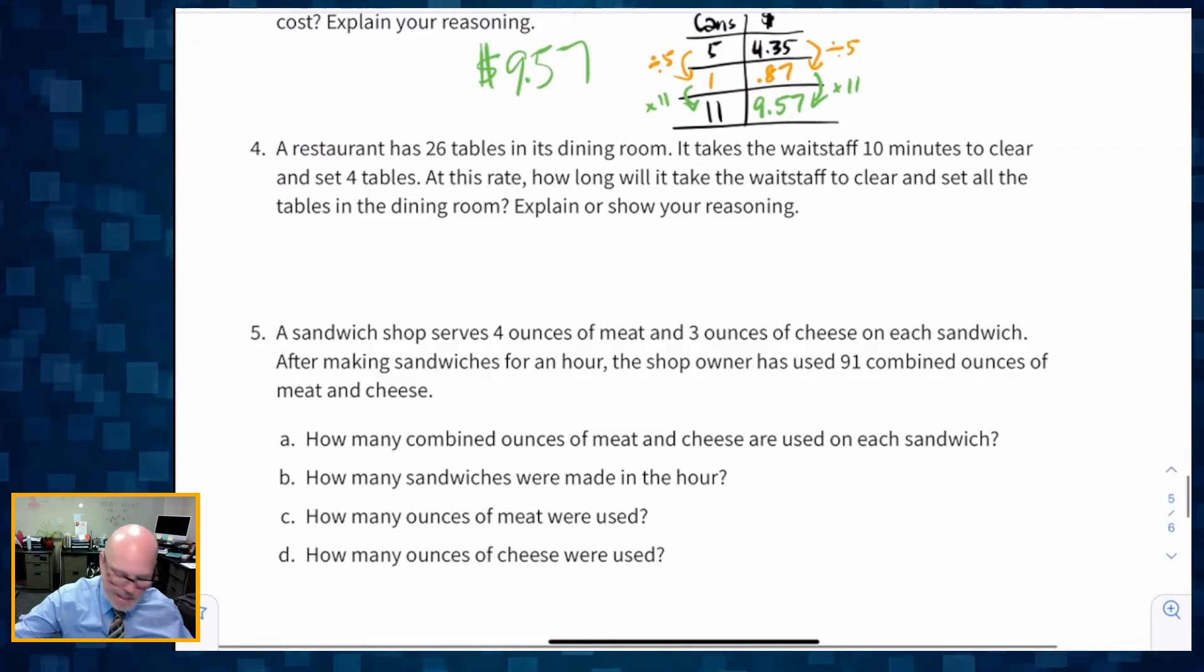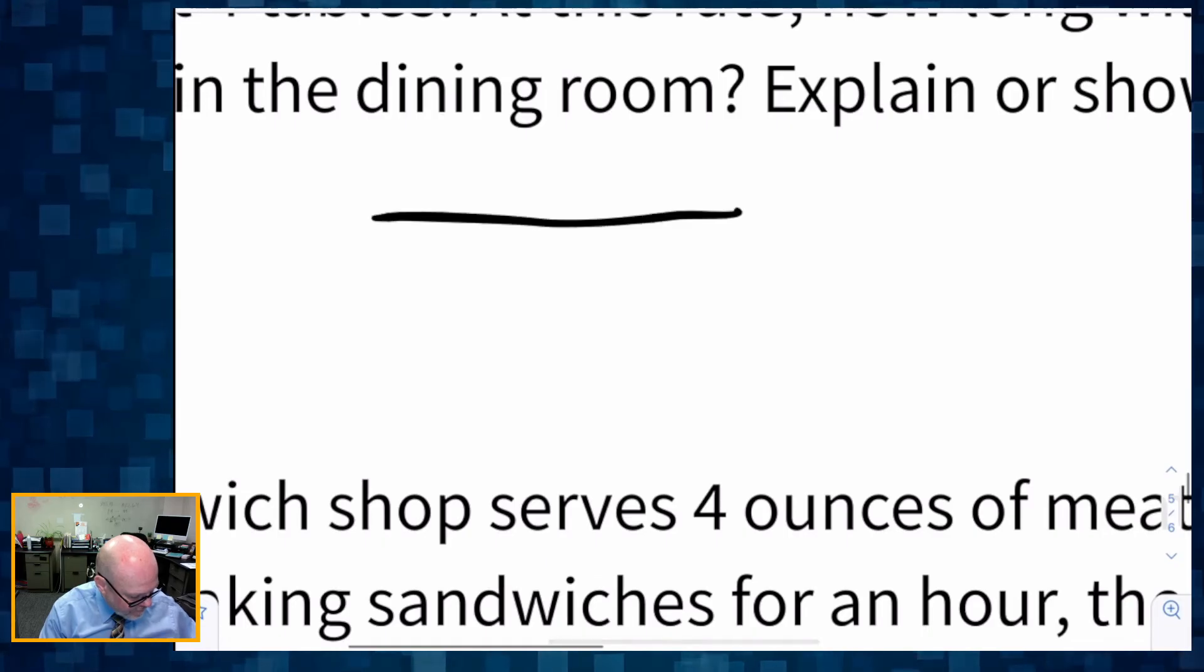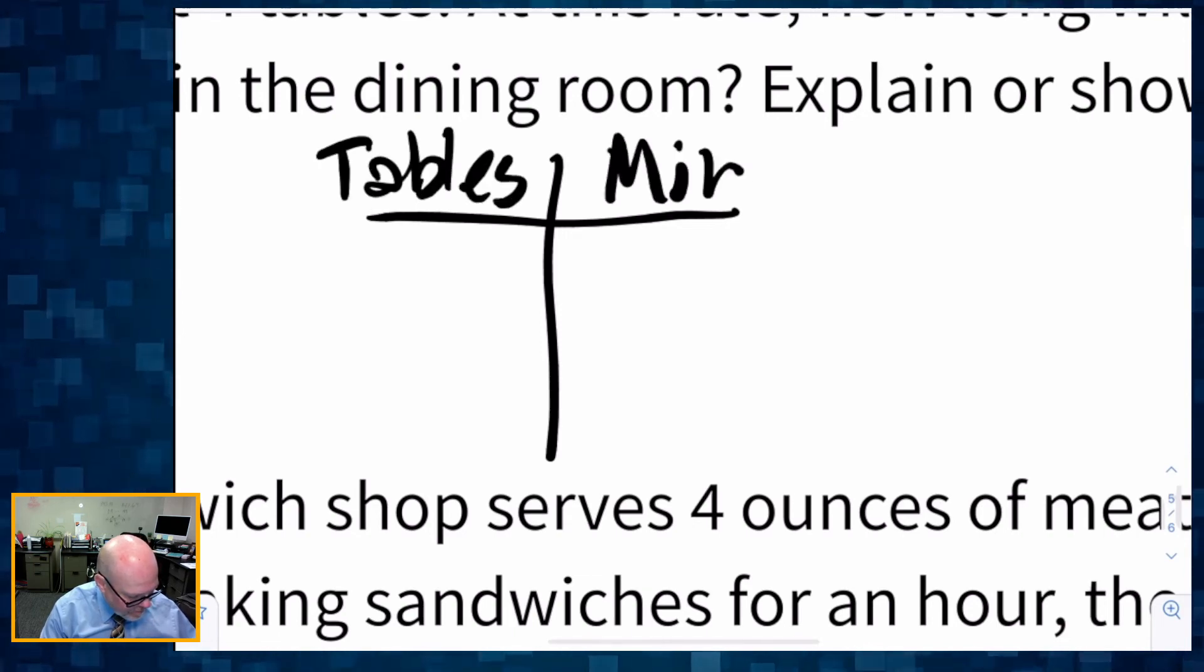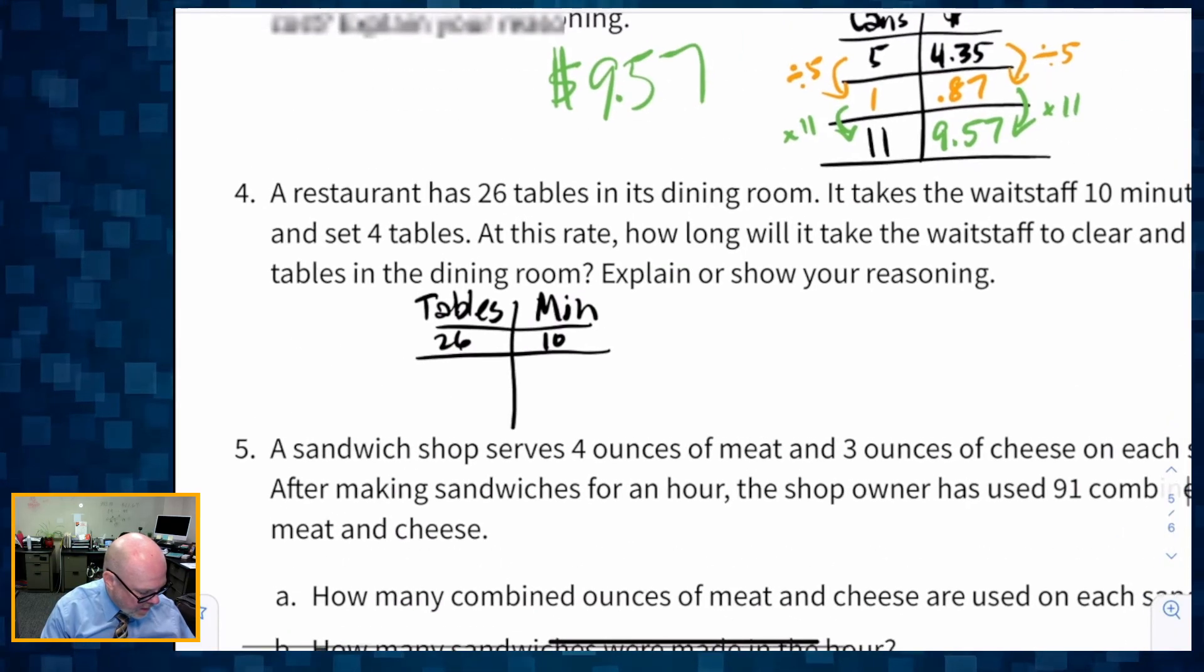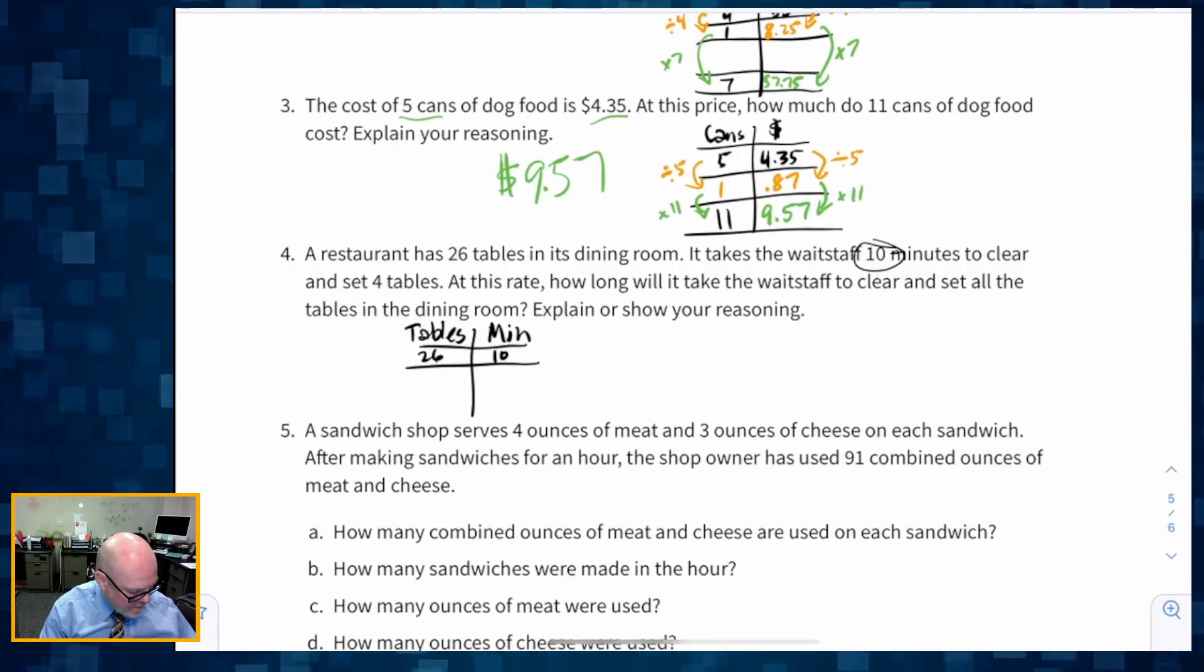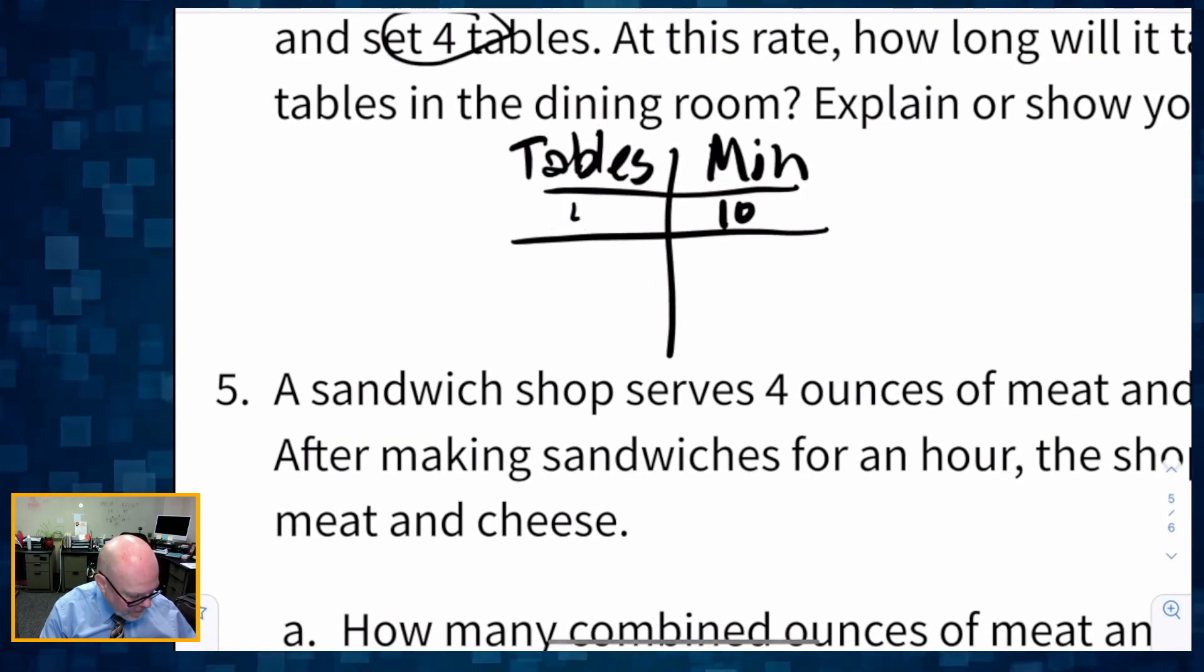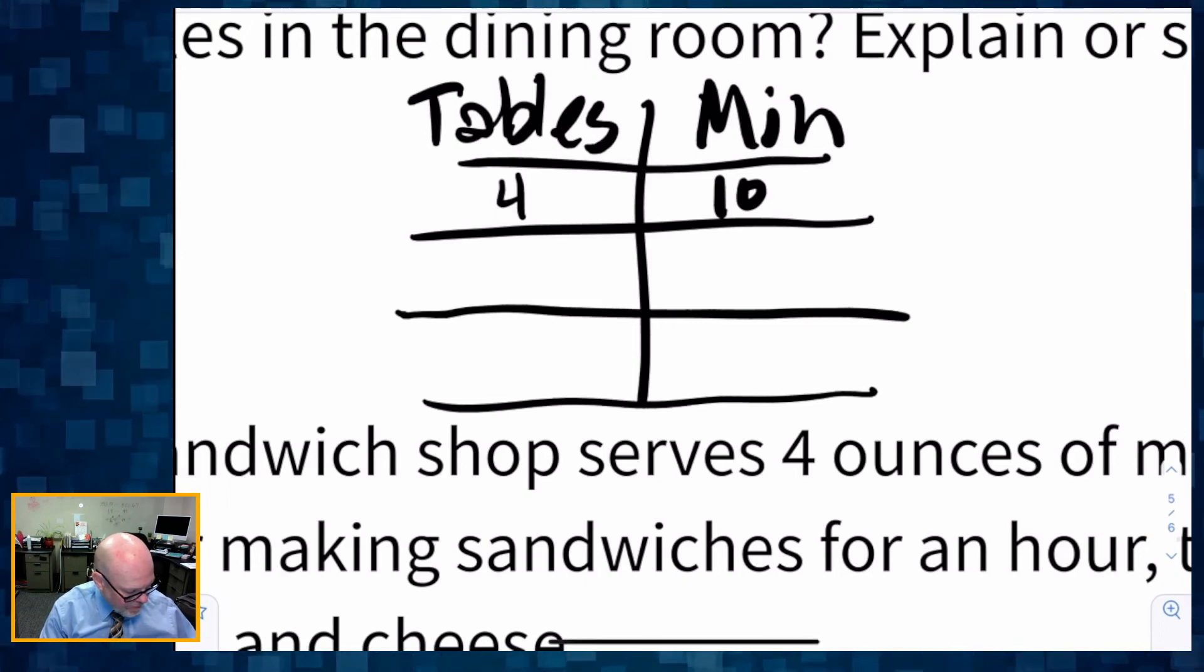The next one. A restaurant has 26 tables in its dining room. It takes the waitstaff 10 minutes to clear and set four tables. At this rate, how long will it take the waitstaff to clear and set all 26 tables? So let's zoom in here. Tables and minutes. And I think they said, wait, not 26 tables is 10 minutes. It's 10 minutes to do four tables. And we want to know 26 tables. So four tables gives us 10 minutes. And we want to know how long is it going to take us to do 26 tables.